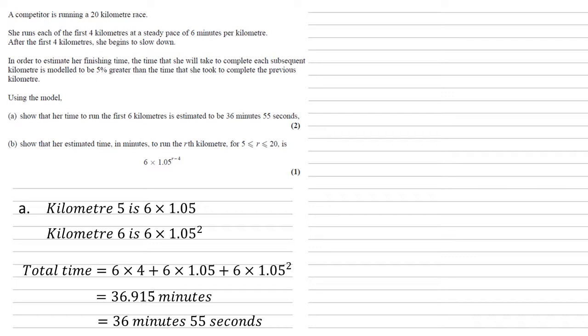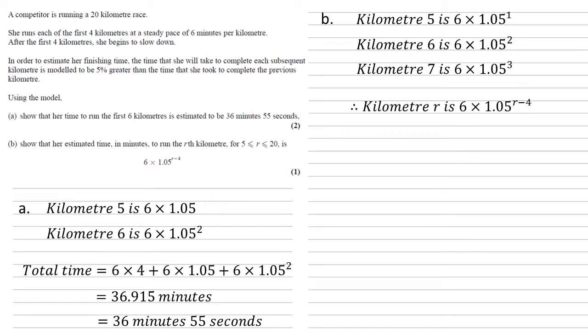For part b, we need to show that her estimated time in minutes to run the r-th kilometer, for r between 5 and 20, is 6 × 1.05^(r-4). Well, let's look at the pattern. We know that kilometer 5 is 6 × 1.05¹, kilometer 6 is 6 × 1.05², kilometer 7 is 6 × 1.05³. So we can quite quickly see from there that the power is always four lower than the kilometer. So the kilometer r must be 6 × 1.05^(r-4).